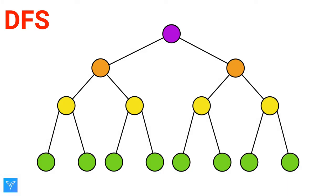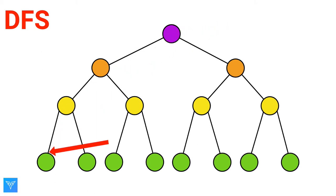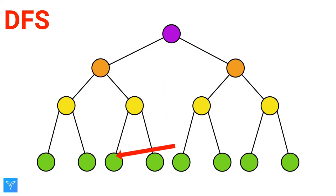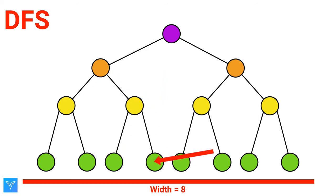In DFS, you start at the root of the tree, or at a specific node if it's a graph, and then search as far as possible along each branch before you backtrack. DFS is good for searching fat trees, or trees that are wider than they are deep.